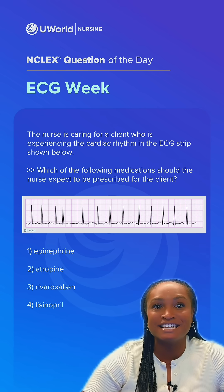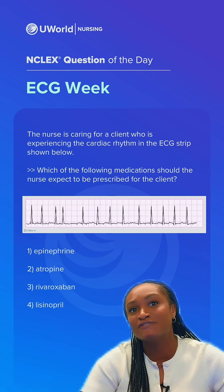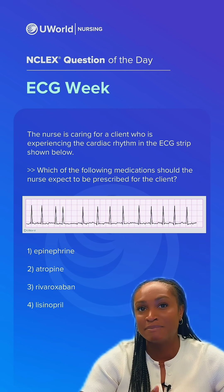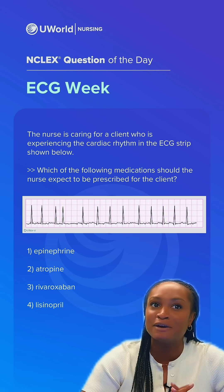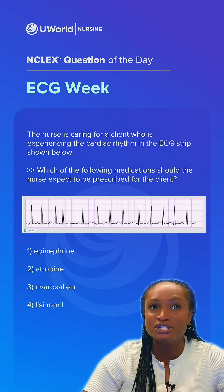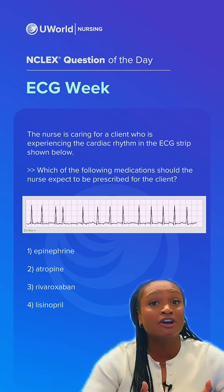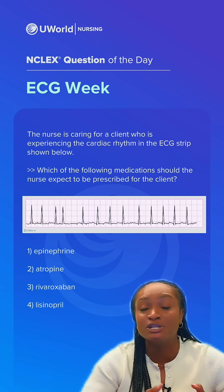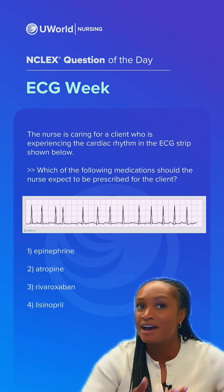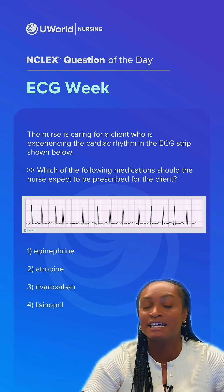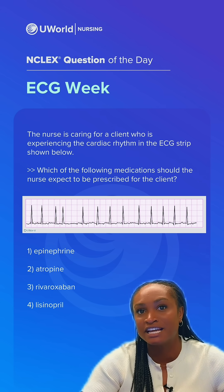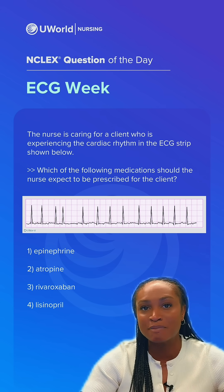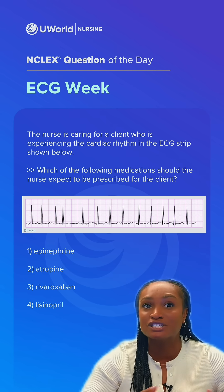Option one is incorrect because epinephrine is used for emergency situations such as cardiac arrest or anaphylactic shock, not AFib. Option two, atropine, is used for bradycardic rhythms to increase the heart rate, so it's not needed in this case. Option four is incorrect because it is an antihypertensive medication, and nothing about this rhythm indicates high blood pressure.